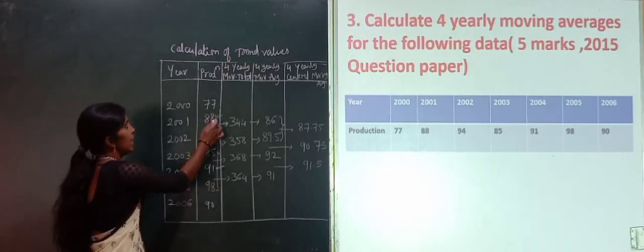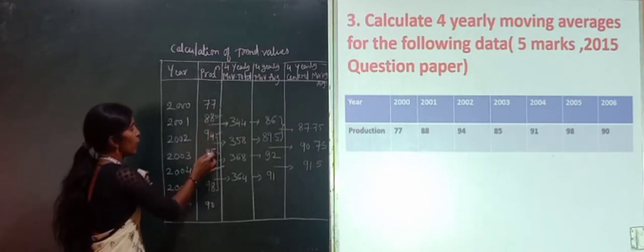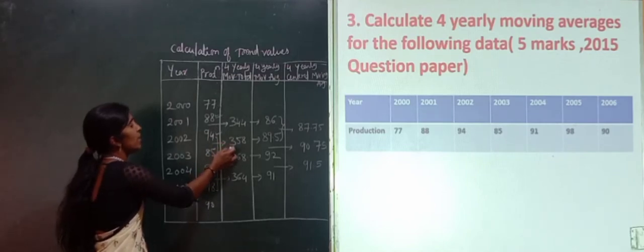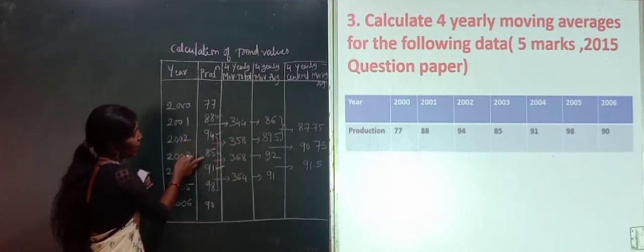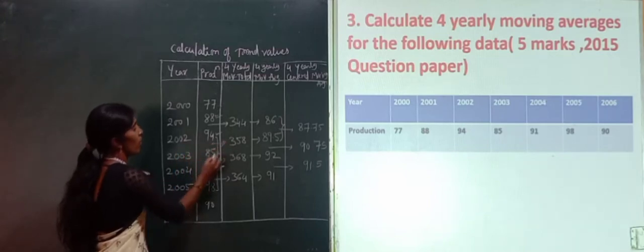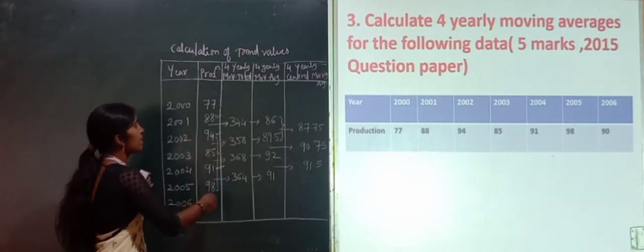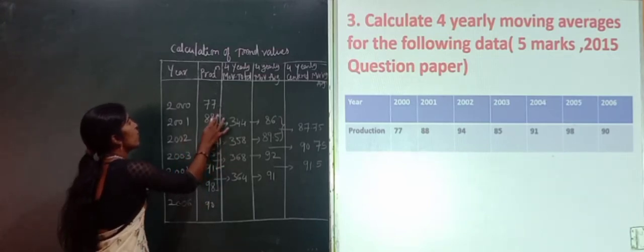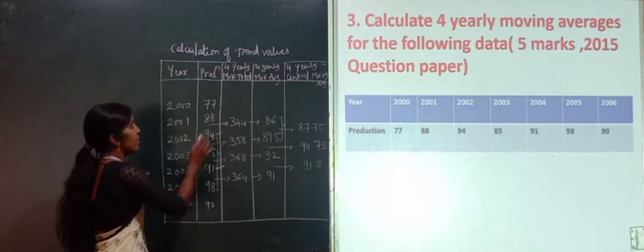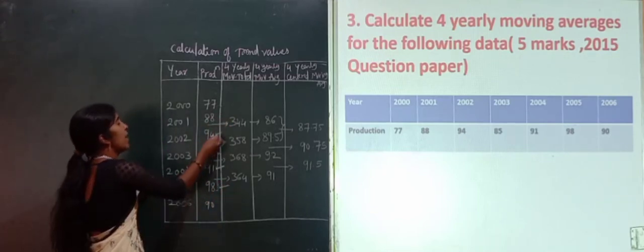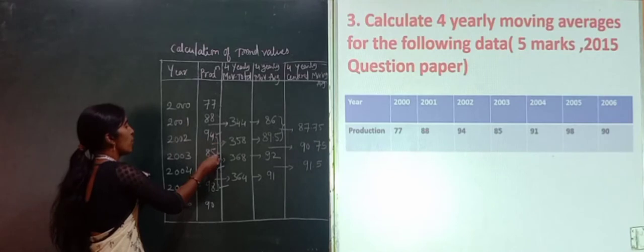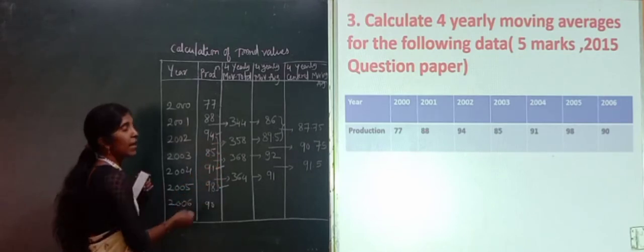Next, we move one step forward: 88, 94, 85 and 91 gives a total of 358. Then the next group — 88 should not be considered, so we include 94, 85, 91 and 98.